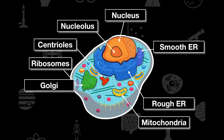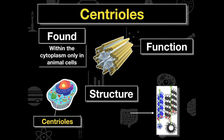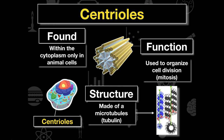The next organelle is centrioles, found within the cytoplasm only in animal cells. Their structure consists of microtubules that form together in a pattern that looks like pinwheel pasta. Centrioles are really important to organize and facilitate cell division — they create a solid structure with the microtubules that allows the cell to separate from one cell into two cells.